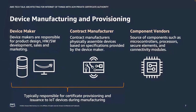Every IoT use case involves a physical device that has to be manufactured. The device maker must decide at what point during manufacturing a device receives its unique certificate and private key. To understand this, we should look at the different entities that make up a manufacturing supply chain. First, you have your device maker — responsible for product design and development, sales and marketing, and sometimes distribution. In many cases they outsource production to a contract manufacturer who sources components and builds the physical device.